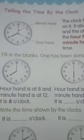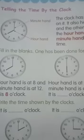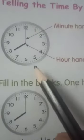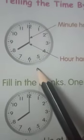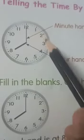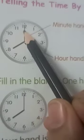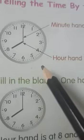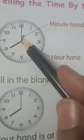So, today we are going to learn telling the time by the clock. What is this? This is the clock. The clock has numbers 1, 2... 12 marked on it. And it also has two hands.